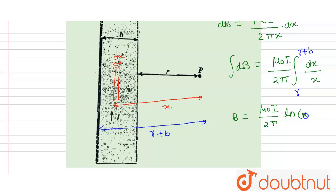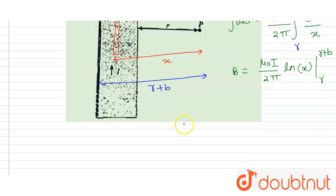ln x, limits will be r to r plus b. So the magnetic induction B will come out μ₀I divided by.